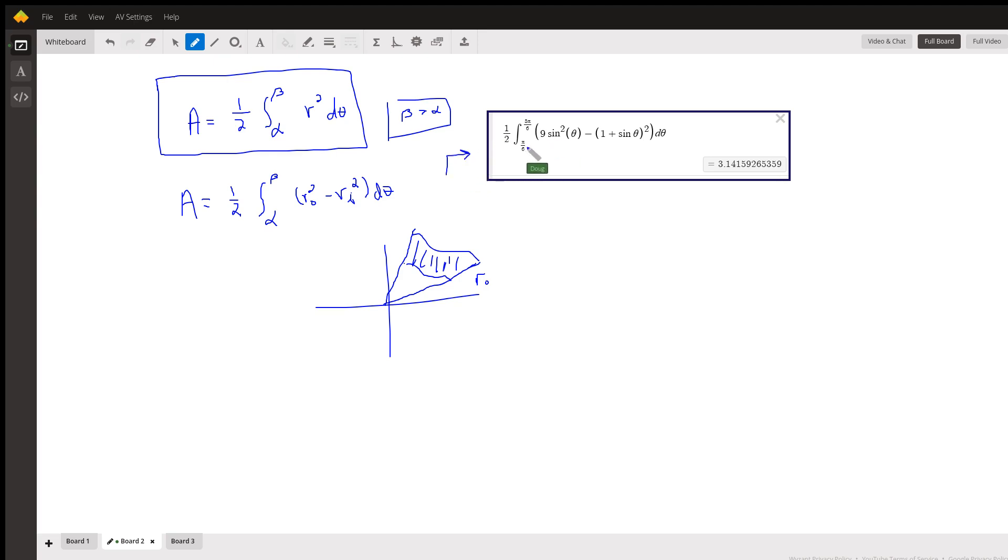One half, alpha to beta, pi over 6 to 5 pi over 6 of the outer radius squared. 3 sine theta squared is 9 sine squared theta minus the inner radius squared.